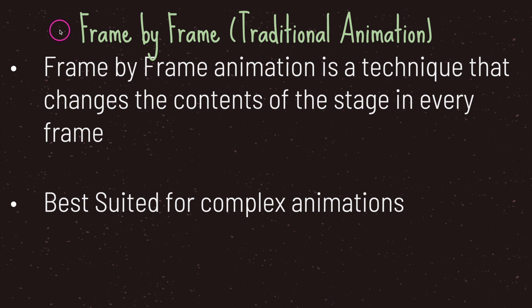Let's start with frame by frame animation. Frame by frame animation is a technique that changes the contents of the stage in every frame, and it is best suited for complex animations. The reason for that is because frame by frame creates a standalone image that's unique for each individual frame. Frame by frame animation is the more traditional animation.